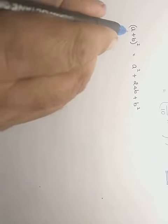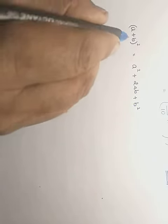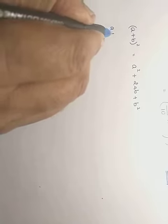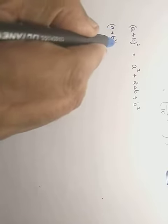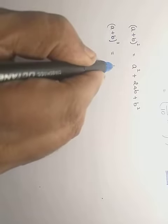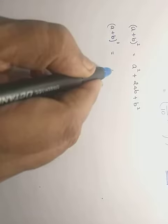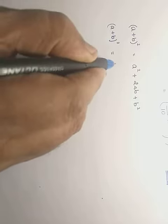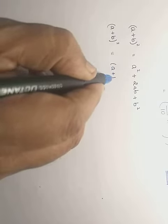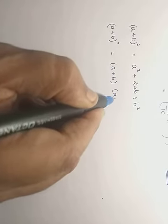Let us see here, (a + b) whole square means (a + b) written 2 times or multiplied 2 times: (a + b) into (a + b).